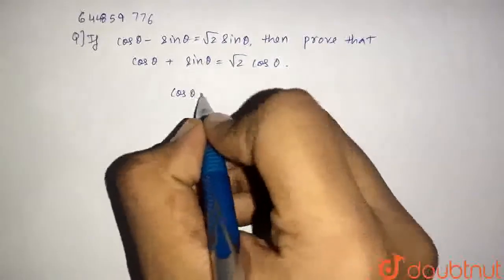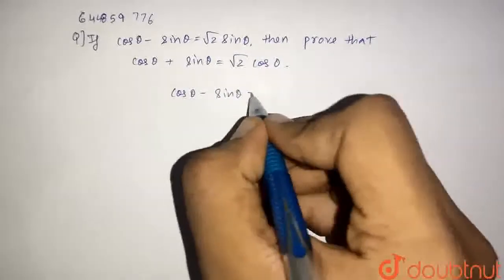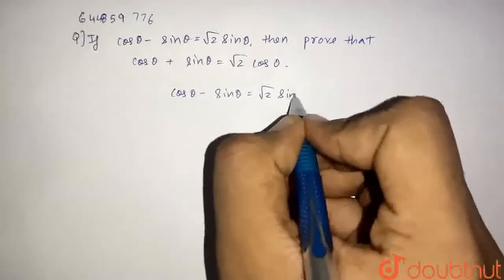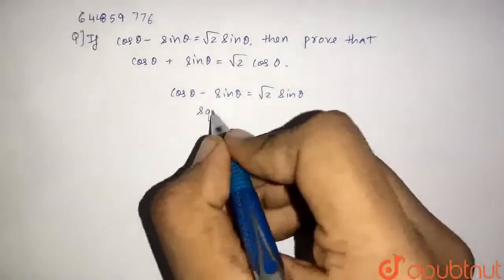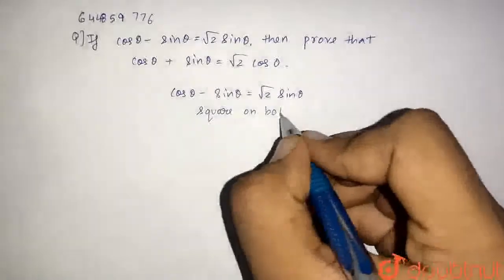So what we are given is cos θ minus sin θ is equal to root 2 sin θ. Now, square on both sides.